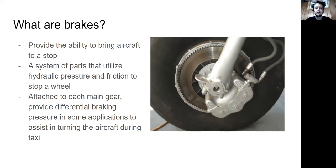The brake system is a system of parts that utilize hydraulic pressure and friction to stop each individual wheel. Each brake system is attached to each main gear. In some aircraft, you can provide differential braking pressure, which can assist to turn the airplane during a taxi situation.